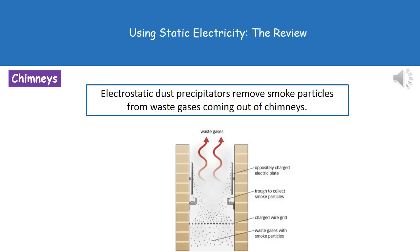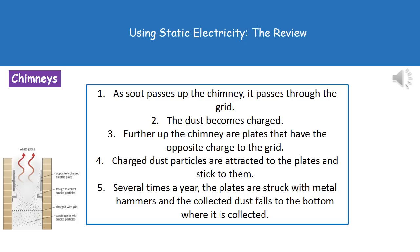The whole purpose behind the electrostatic dust precipitator is to actually remove particles of smoke from any waste gases coming out of chimneys in industry. In our diagram we can see how it works, and we're going to look at that in a little bit more detail next.